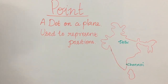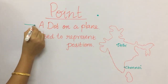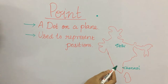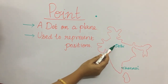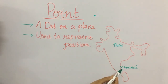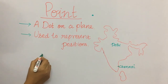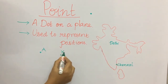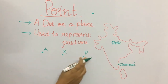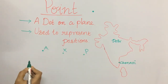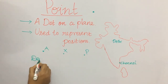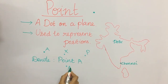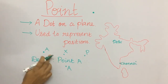Next, moving on to point — a point is a dot on a plane. It is used to represent positions. I have roughly drawn an India map to show you how we represent places using a point. This point represents Delhi. This point represents Chennai. Likewise, in maths, we represent a point using capital letters. This point is point A, or point X, or point P. We can give any name using capital letters. We denote it as point A, or put a dot and A — both mean point A.